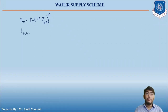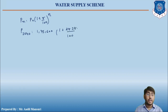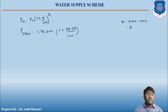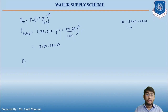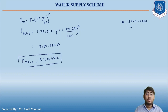In the year 2040: P0 is 1,75,600; r is 28.28; n equals 2040 minus 2010 which is 3 decades. Substituting: 1,75,600 into (1 + 28.28/100) raised to 3 equals 3,70,681.88. So the population in the year 2040 will be approximately 3,70,682. This is how the calculation for the geometrical increase method is done.